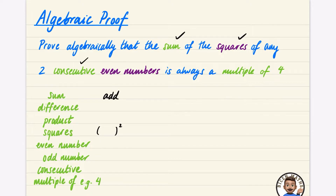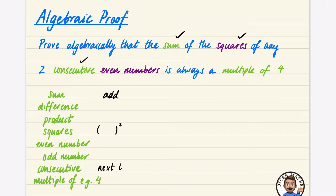Consecutive means next to each other — for example, consecutive numbers could be 3, 4, 5 or 111, 112, 113. Consecutive even numbers would be things like 12, 14, 16 — even numbers without any gaps. And a multiple of four is just something that is in the four times table.